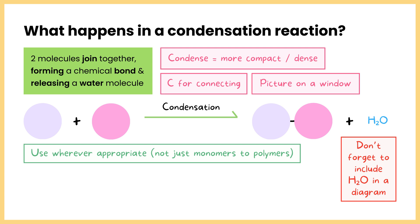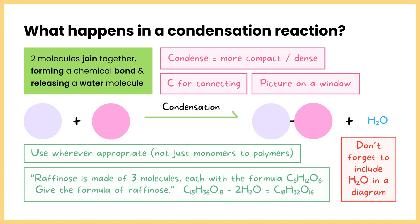An application question that has come up a few times is where they give you a molecule not on the specification — say something like raffinose — and give you some info about it: raffinose is made of three molecules each with the formula C6H12O6, and you would then have to give the formula of raffinose. It isn't just as simple as multiplying everything by three. It's testing your knowledge that there would be two condensation reactions and therefore two water molecules released, so you subtract four hydrogens and two oxygens, leaving you with C18H32O16.